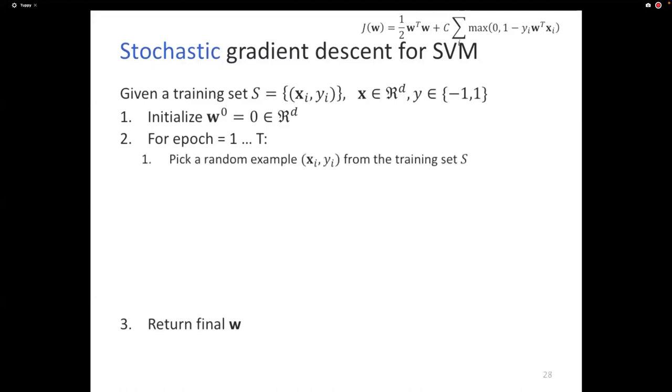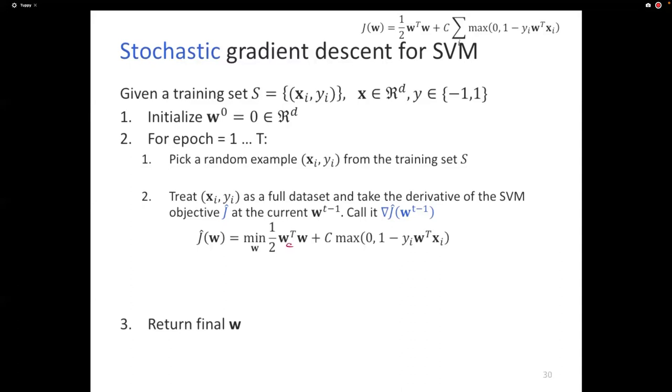You initialize the weights to whatever you want. The good news about convex optimization is, it does not matter where you initialize, you're guaranteed to get to a minimum. So you can initialize it to whatever you want. Let's say we initialize it to 0. And then learning proceeds in multiple epochs. After all the epochs are done, you return the final weight vector. At each step, you pick one example randomly from the training set. Let's call that x i y i. And you pretend that this example is the only data you have. This example is all the data you have. If this was the only data you have, you can construct a loss function using that. So your loss function might look something like this. You shouldn't have this minimizer here. It is half w transpose w plus c times max of, well, the hinge loss over that one example here.